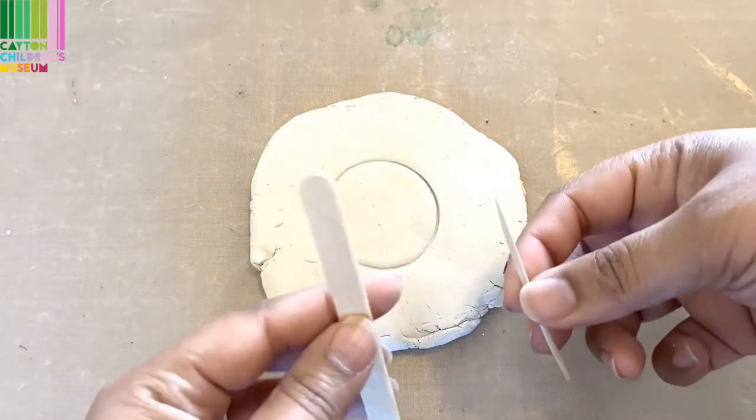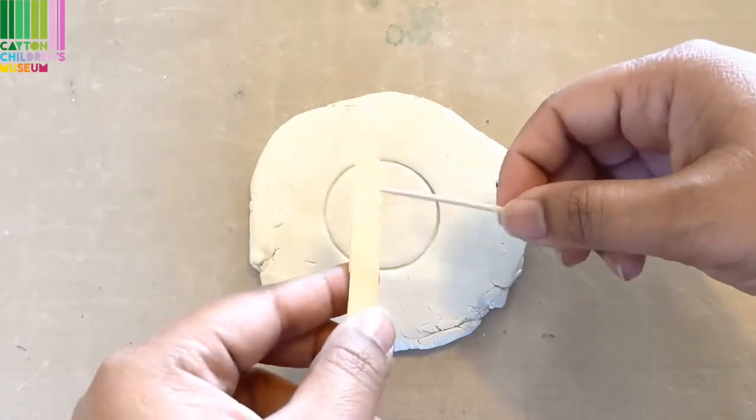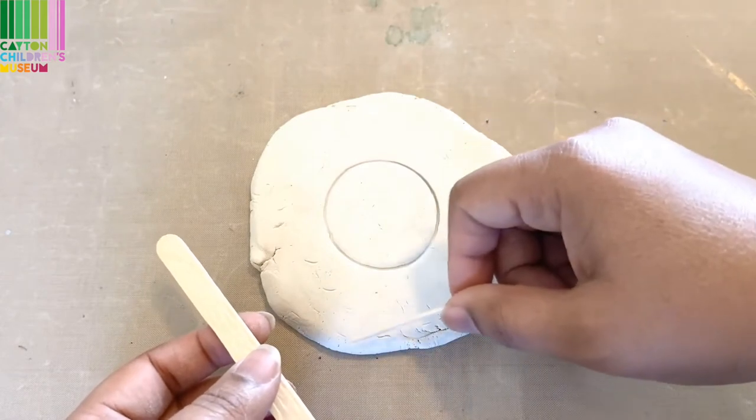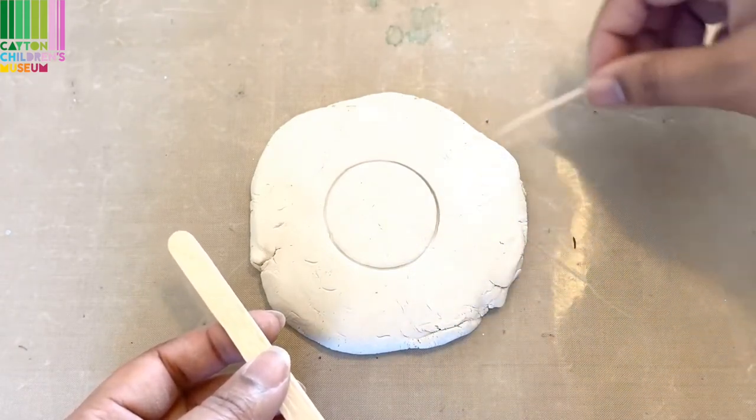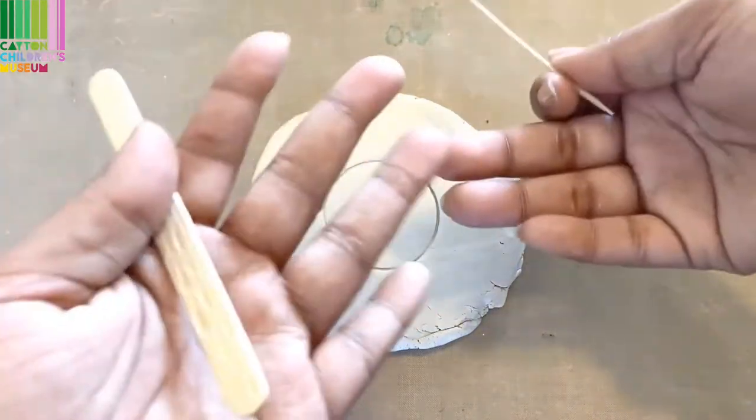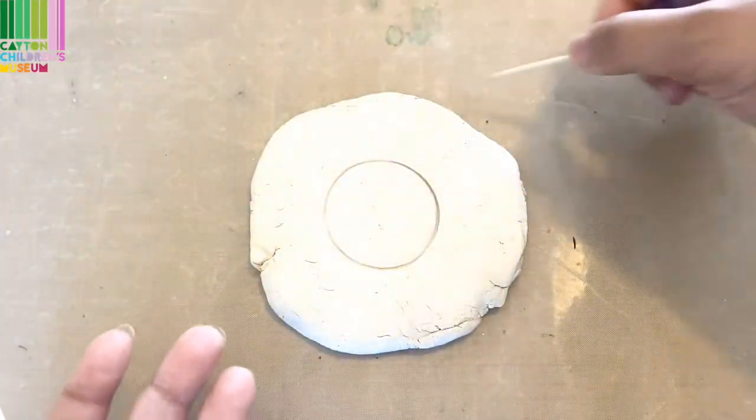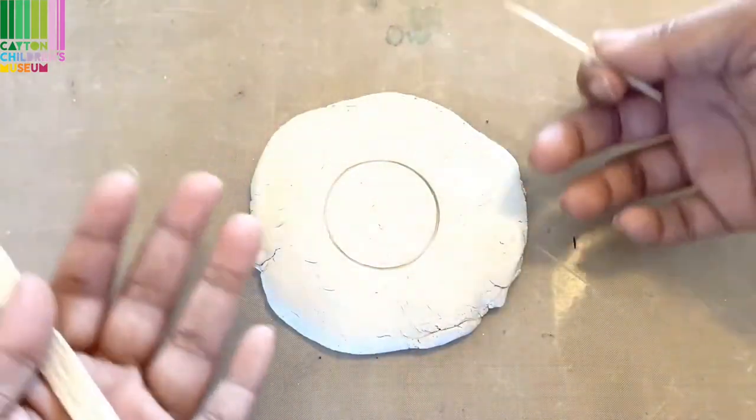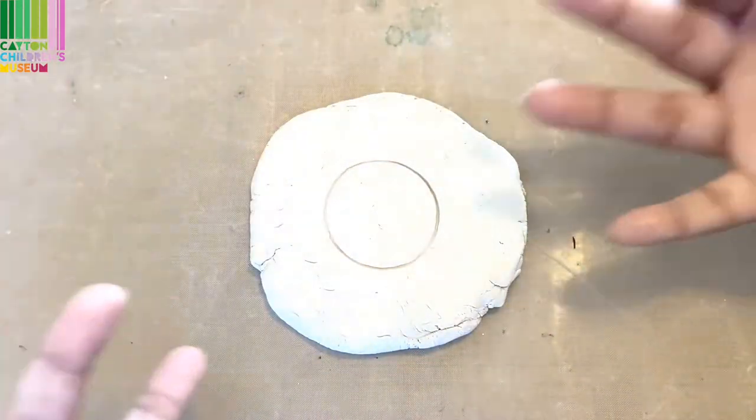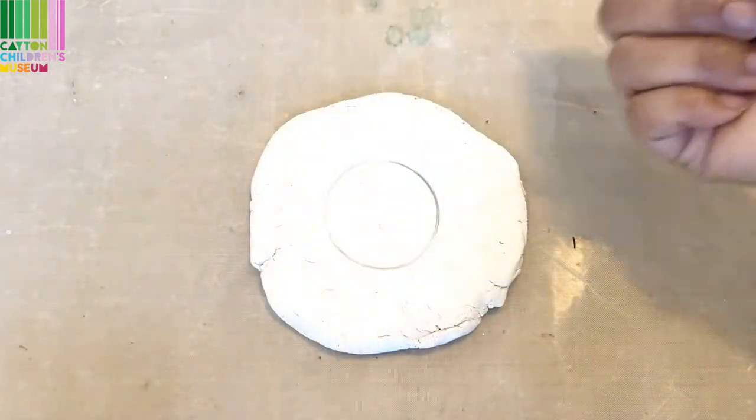The next thing I'm going to do is take some sort of tool just to start drawing in where the flower petals will be. Now remember, since this is a handmade project, your flower petals or whatever you are drawing and designing do not have to be perfect. If anything, imperfection adds some charm.